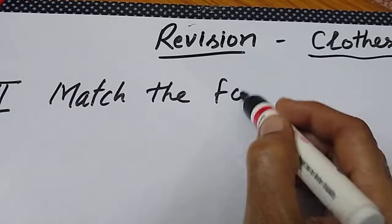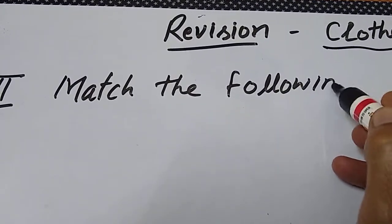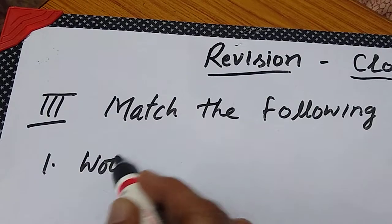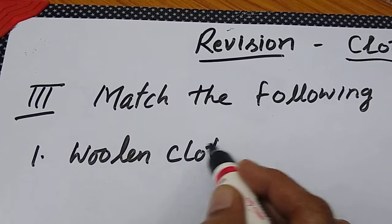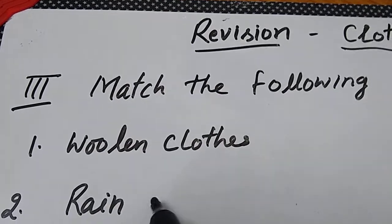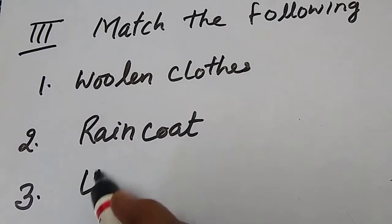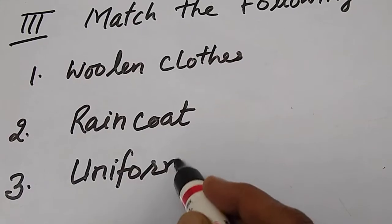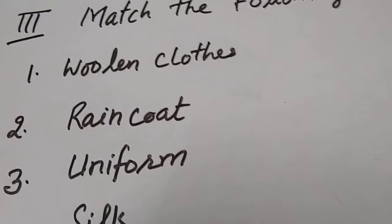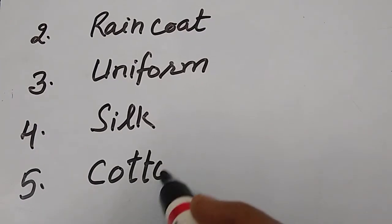Now match the following. First I am writing here, woolen clothes. Second, raincoat. Third one, uniform. Fourth one, silk. And fifth one is cotton.